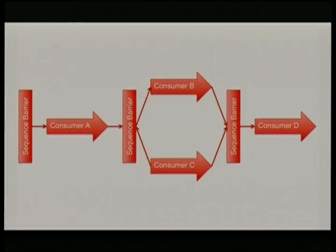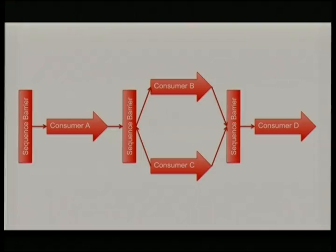Similarly, you can have consumers running in parallel. Here we have a diamond shape where once A processes the event, both B and C can process it together if they're busy waiting on A. That doesn't necessarily mean B and C are running the same event at the same time — if they're running at different speeds and have a backlog, they might be at different events. But if they're both waiting on A to get their next event, as soon as A finishes, both will pick it up at the same time, providing there are obviously enough cores.